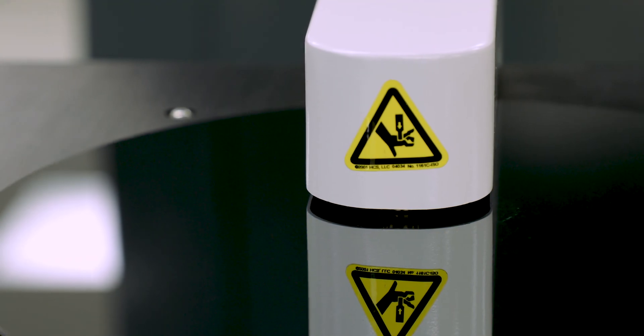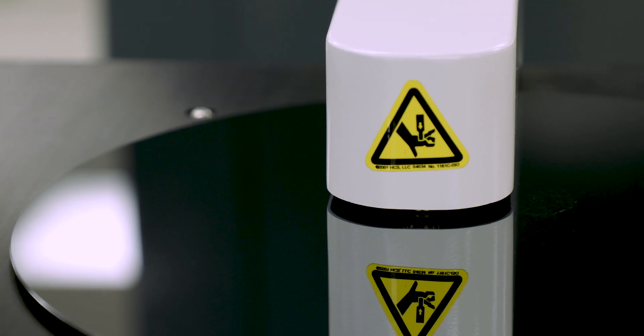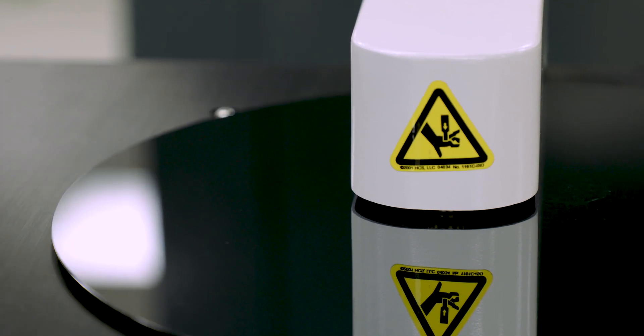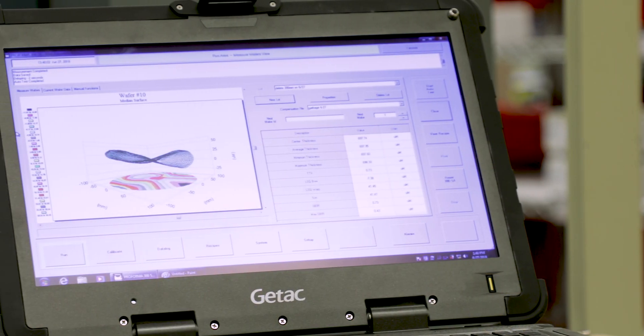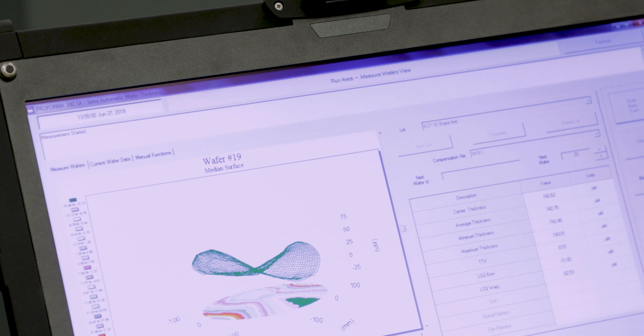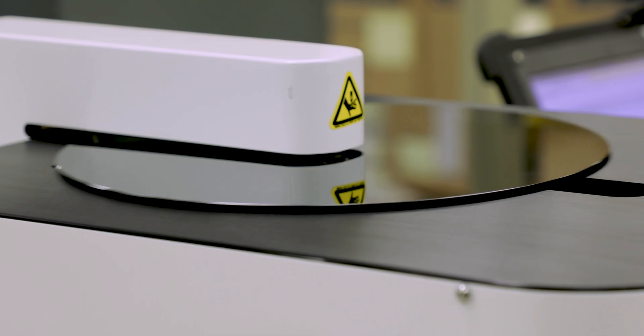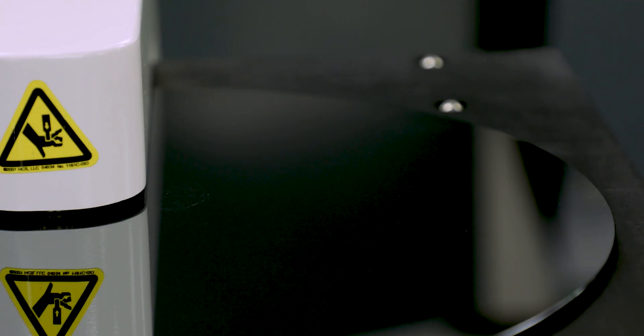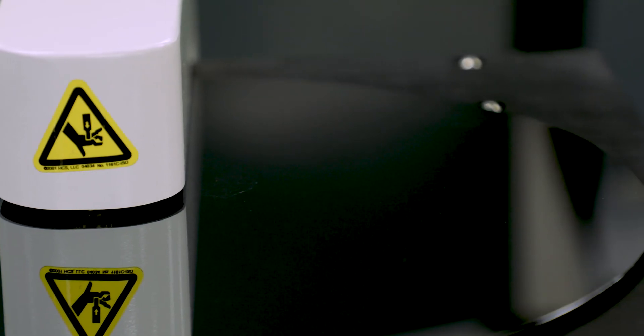The Proforma 300 SA delivers full wafer surface scanning according to ASTM and SEMI compliant or user-defined scan patterns. The generated 3D wafer images combined with customizable data reports can be used to monitor wafer thickness and thickness variation, bow, and warp.